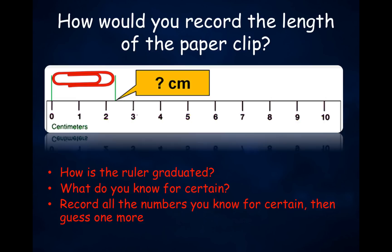How would you record the length of this paper clip using this particular ruler? Consider how the ruler is graduated, what you know for certain, then record all numbers you know for certain and guess one more. You know that the paper clip is somewhere between 2 and 3 centimeters, so an appropriate measurement would be 2.1, 2.2, 2.3, or 2.4 centimeters. This measurement has two significant digits — the 2 you know for certain, and the decimal digit is a guess.